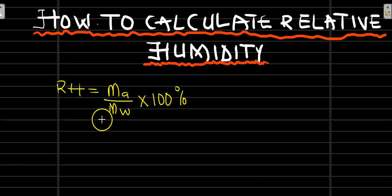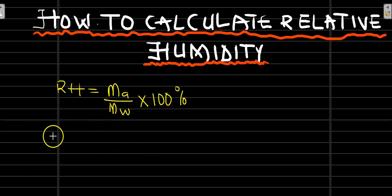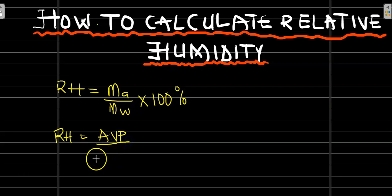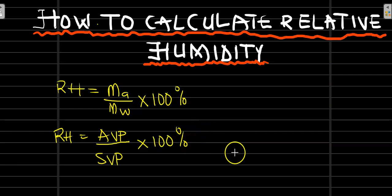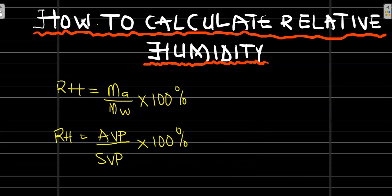Another formula we can use is: relative humidity equals the actual vapor pressure divided by the saturated vapor pressure, times 100%. We can equally say that the formula for relative humidity is the vapor pressure — which is the partial pressure — divided by the saturated vapor pressure at the same temperature of air.